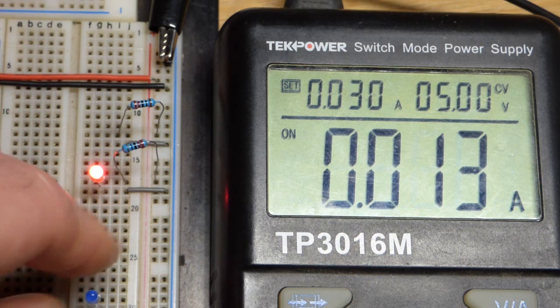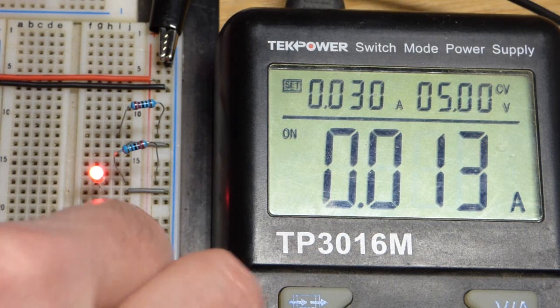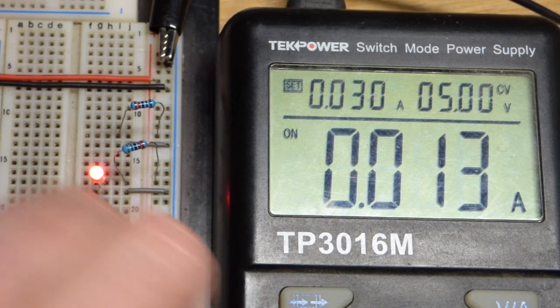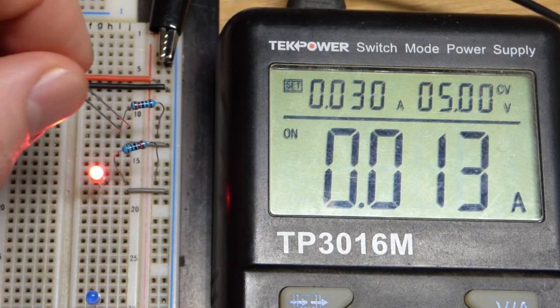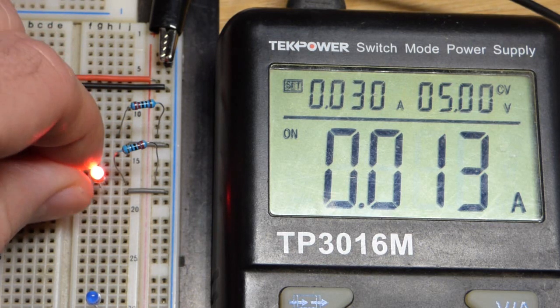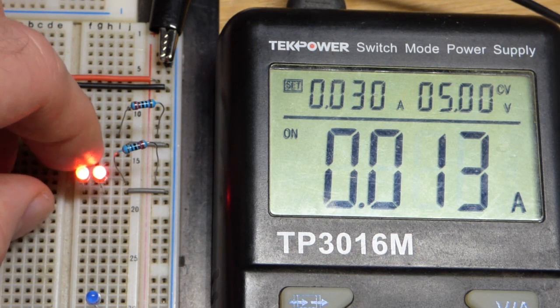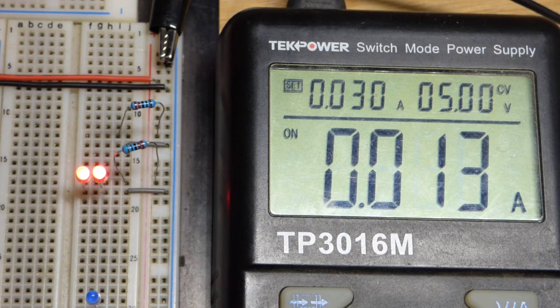I'll remove this blue one and put a red one in its place. So we should see it'll still be about 13 milliamps of current because the resistor is what's going to set the current. Both of these are now dropping about two volts. So now they're splitting up the current.